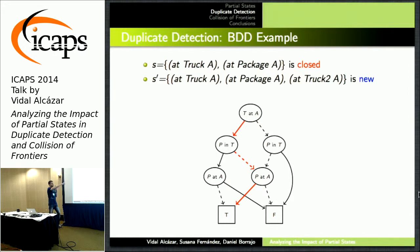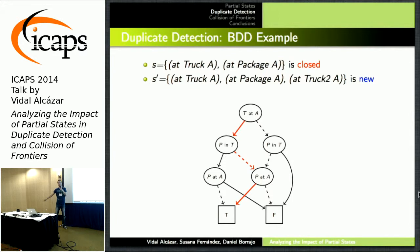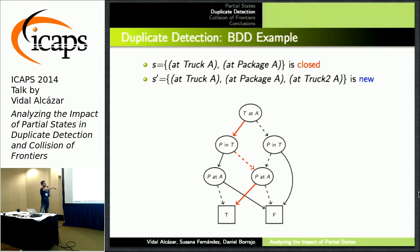To get a clearer picture of what a BDD looks like: this is one BDD that includes several states in a typical logistics domain. Say that state S belongs to the closed list already, and the path highlighted in red is the query that represents that this state goes to the true node, meaning yes, we saw it. So if we open some new state which is the same but in which some extra variable is known too — which will be subsumed unless the G is smaller — if we follow the same path and take the decisions at every single node, we will follow the same path and get to a true sink node, which means that state is subsumed.